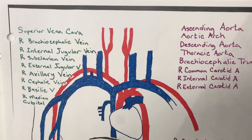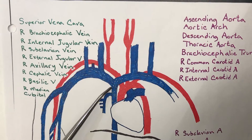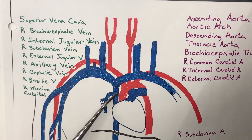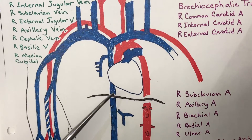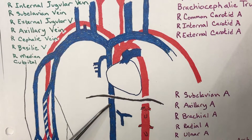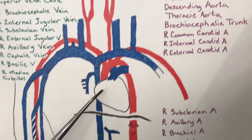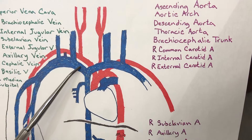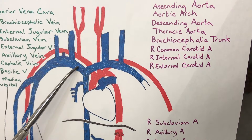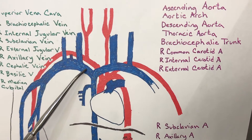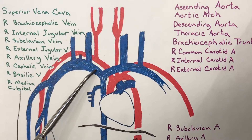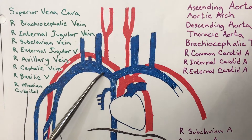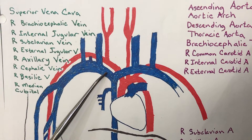While we're on this diagram, this is your superior vena cava, inferior vena cava. This is your right brachiocephalic vein and left brachiocephalic vein.